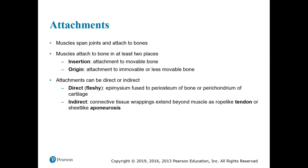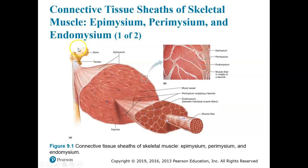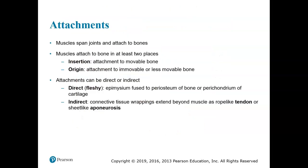Individual muscles like biceps and triceps each attach to bone in at least two places. The insertion of the muscle is the attachment to the movable bone. The origin is the attachment to the immovable or less movable bone. In the diagram we just looked at, the attachment at the femur is the origin — the part that does not move. Attachments can be direct or indirect, meaning they may not have a tendon or a connective tissue sheet like an aponeurosis, which you have between the frontal bone and the occipital bone of the skull.